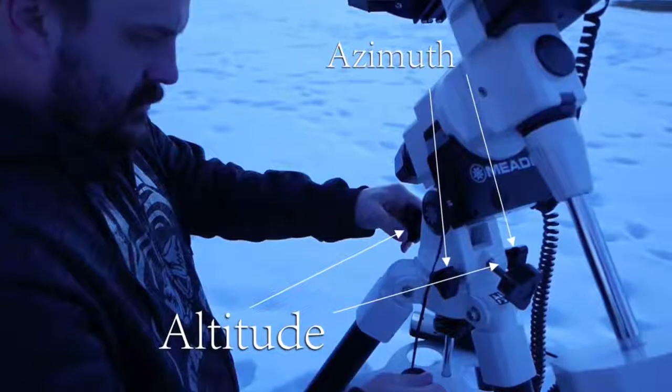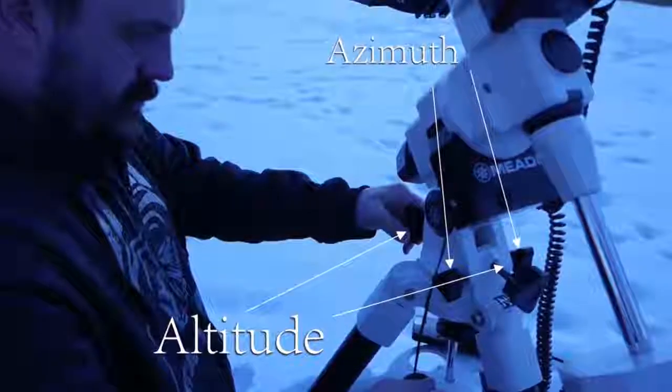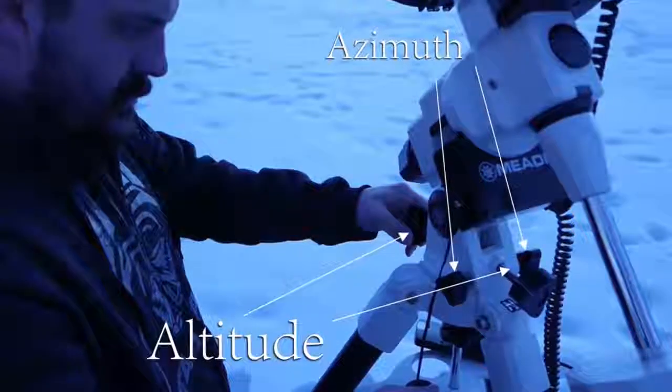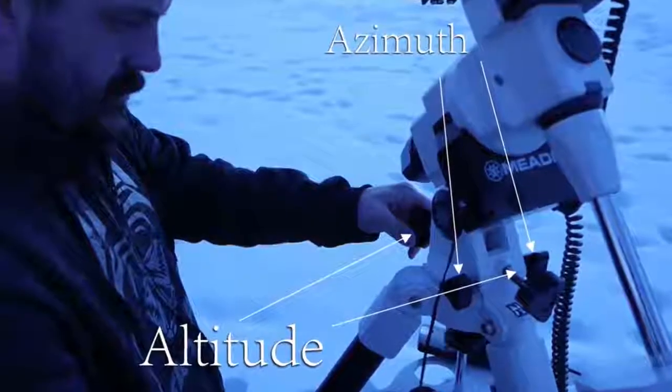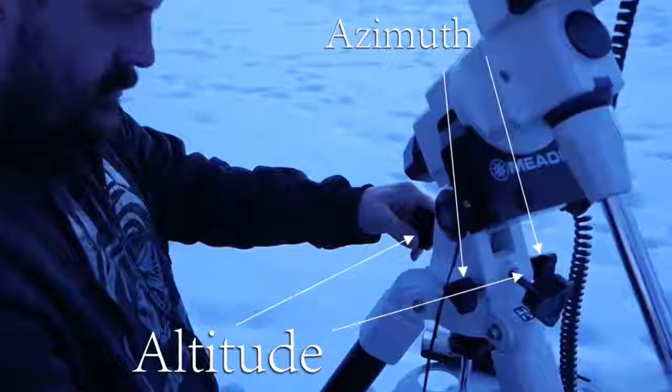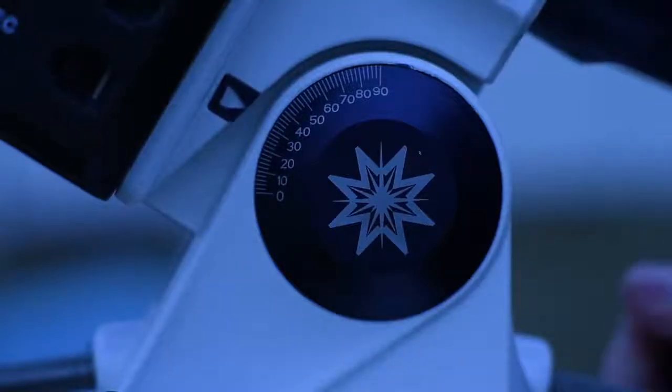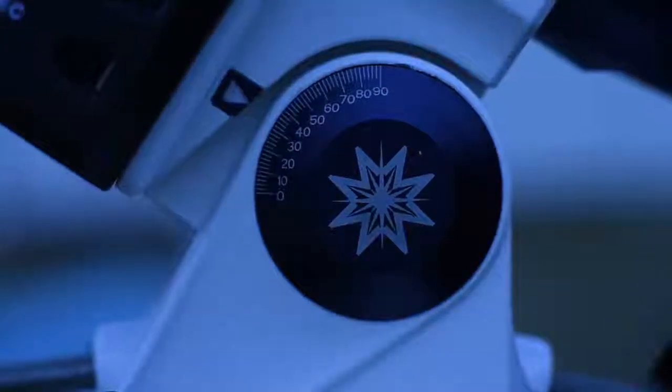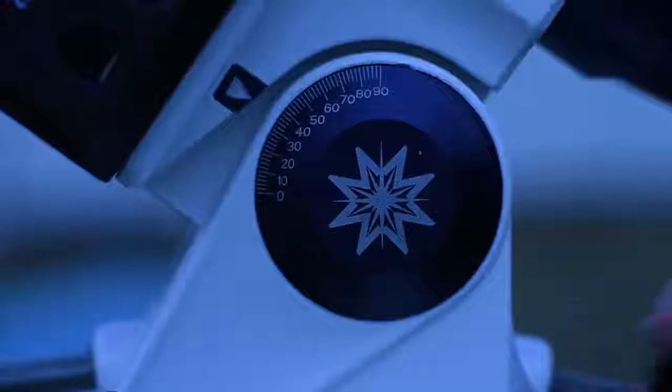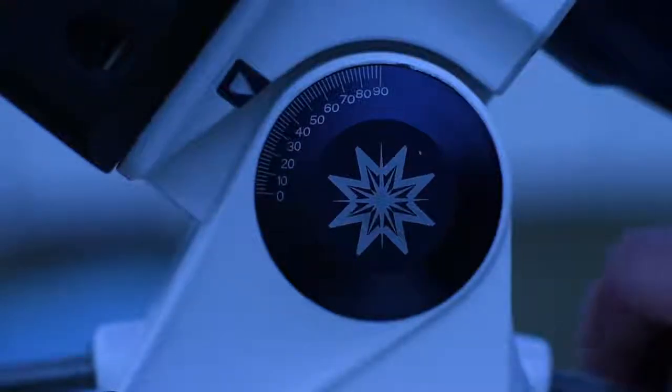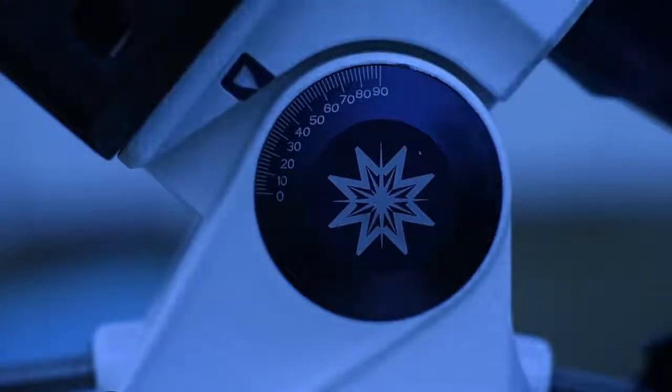Loosen the front altitude lock knob a few turns to allow the altitude adjustment knob to be adjusted. Move the back altitude adjustment knob until the latitude scale on the mount matches the latitude of your location. This is the same altitude as the North Star Polaris. For example, in Los Angeles, California, adjust the mount until the scale is at 34 degrees. The North Star Polaris will also be at 34 degrees above the horizon.